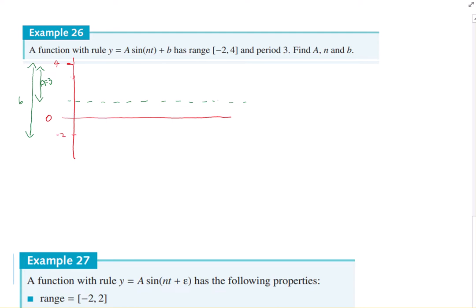And it's got a period of 3. So there's our period there. There's 3. Half of it is 3 on 2. Half of that is 3 on 4. So if we mark in our sign graph, starts in the middle, goes up.